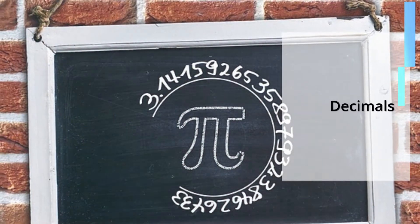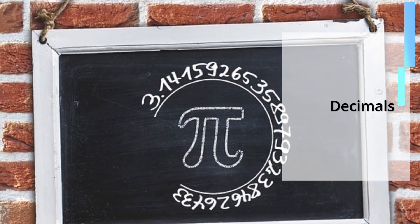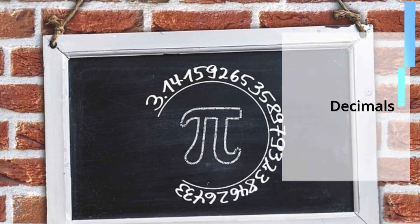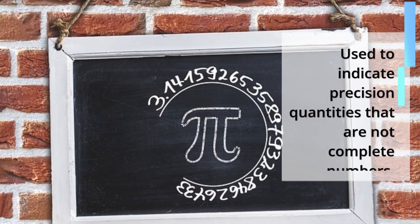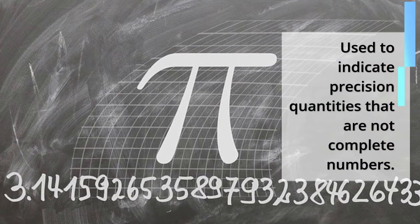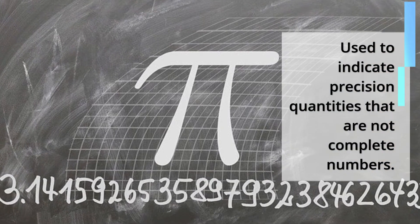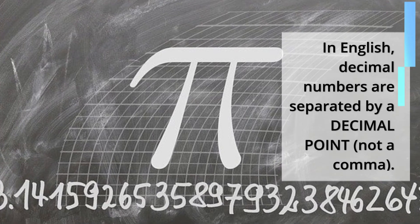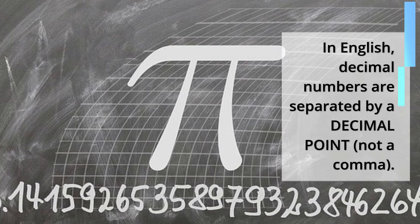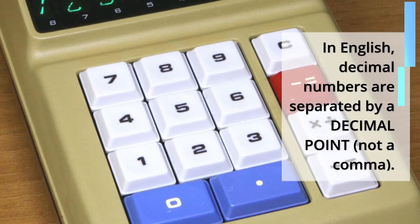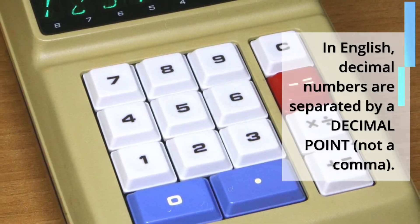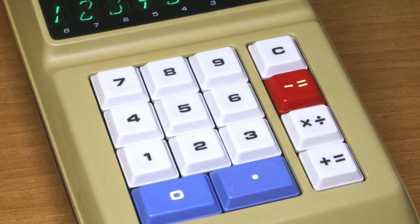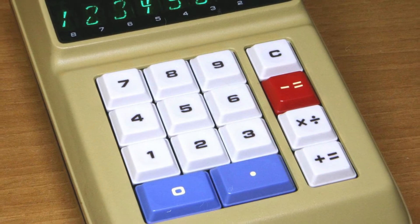Let's move on to decimals. Decimals are used to indicate precision quantities that are not complete numbers. As you see here in the example of pi, pi equals 3.1415 and so on. In English, the decimal numbers are separated by a decimal point, never a comma. For example, on calculators, we see that the decimal is represented by the dot or the point, not a comma.